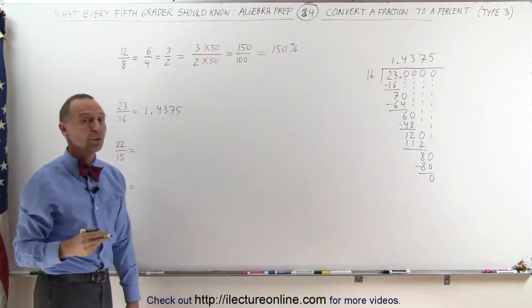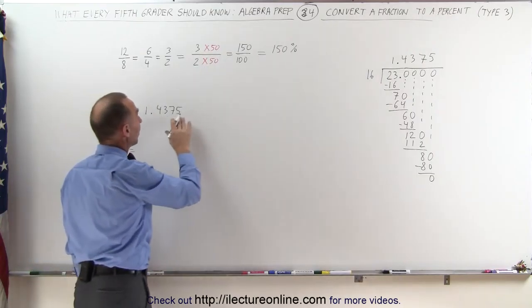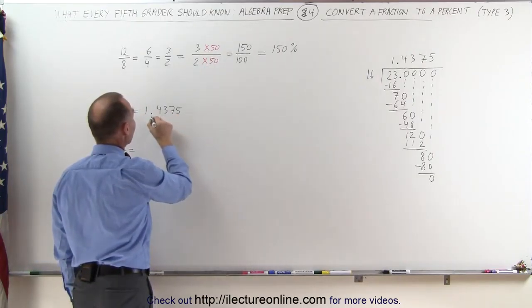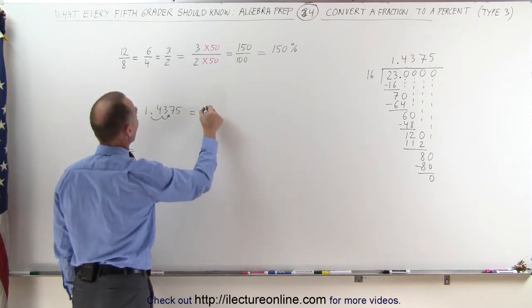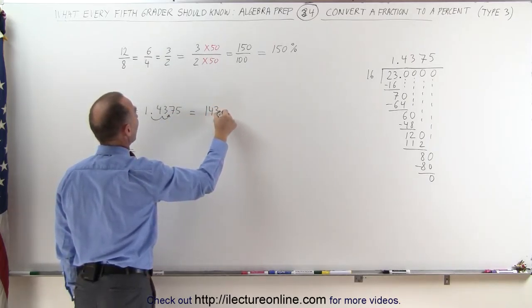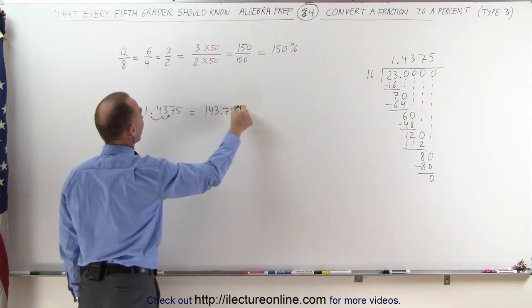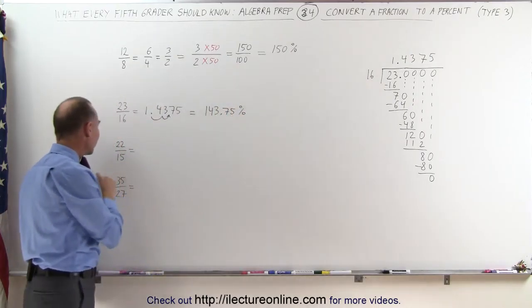Now we employ the rule to take a decimal and change it to a percentage. We simply have to move the decimal spot, the decimal point over two spots. This is therefore equal to 143.75%. Our next example,